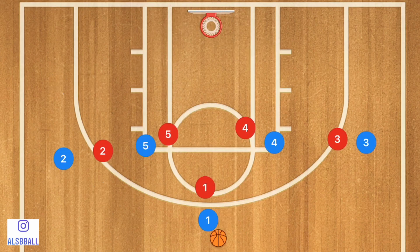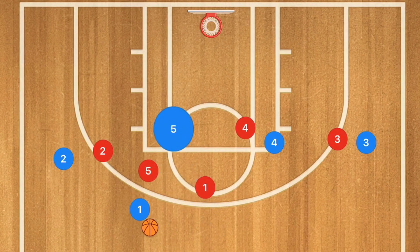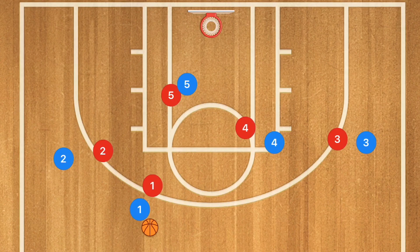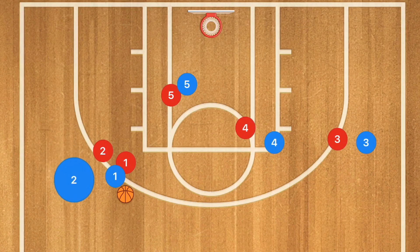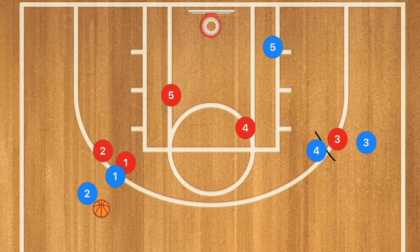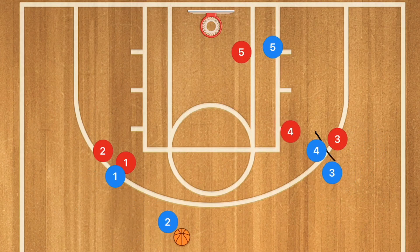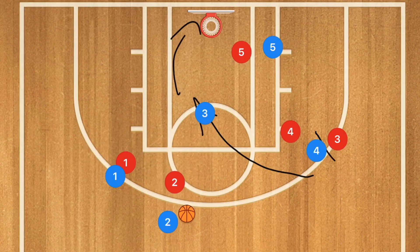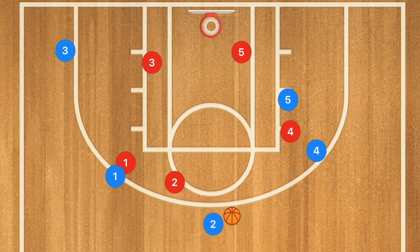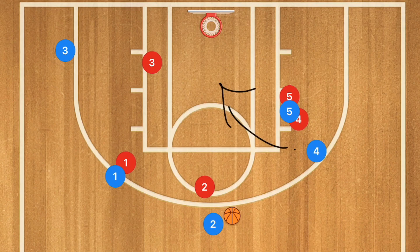Now we move to a quick high 1-4 offense. Player five sets a screen and roll with player one. If they switch and player five is open for the layup, give it to him. If not, player one does a dribble handoff with player two. Player two gets the ball, player four sets a screen for player three, who cuts across the key. If player three is open for a mid-range shot or layup, give it to him. If not, he continues out toward the three-point line, and player five sets a back screen for player four, who should be open for the layup going in front or behind the screen.